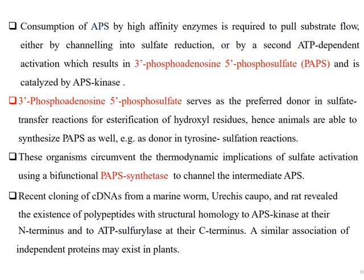Recent cloning of cDNA from a marine worm revealed the existence of polypeptides with structural homology to APS kinase at their N-terminus and to ATP sulfurylase at their C-terminus. A similar association of independent proteins may exist in plants.